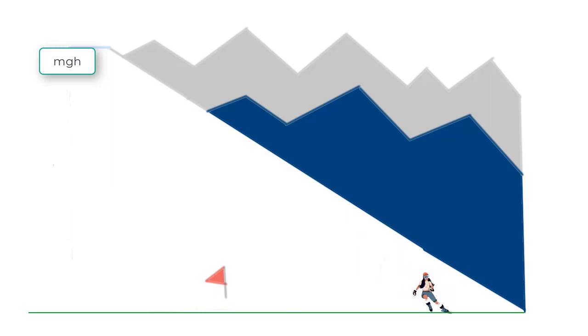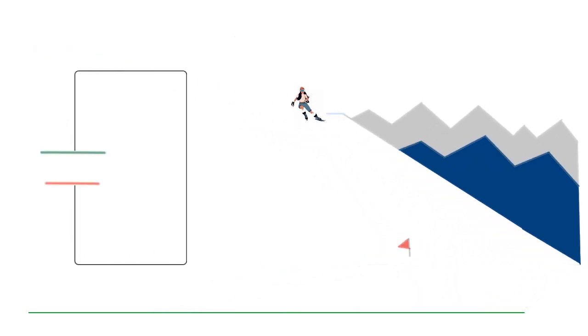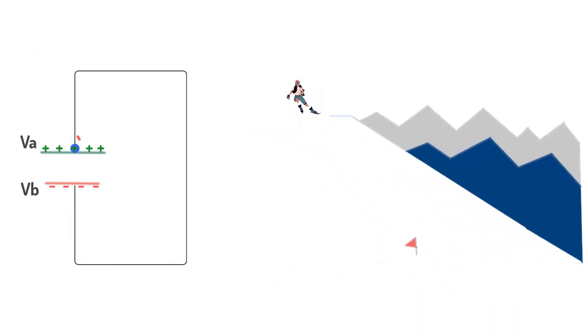Now, let us use this analogy to explain what is happening here inside the battery. So a charge at this point where the potential is VA can move through the circuit because it is at a high potential, quite like when you are at the top of the hill and slide down. It moves through the circuit and reaches a point of lower potential VB.